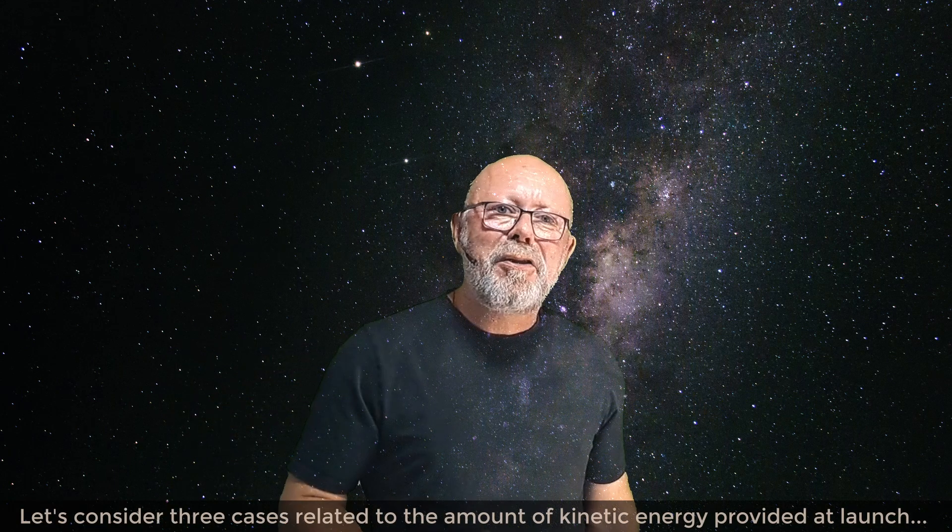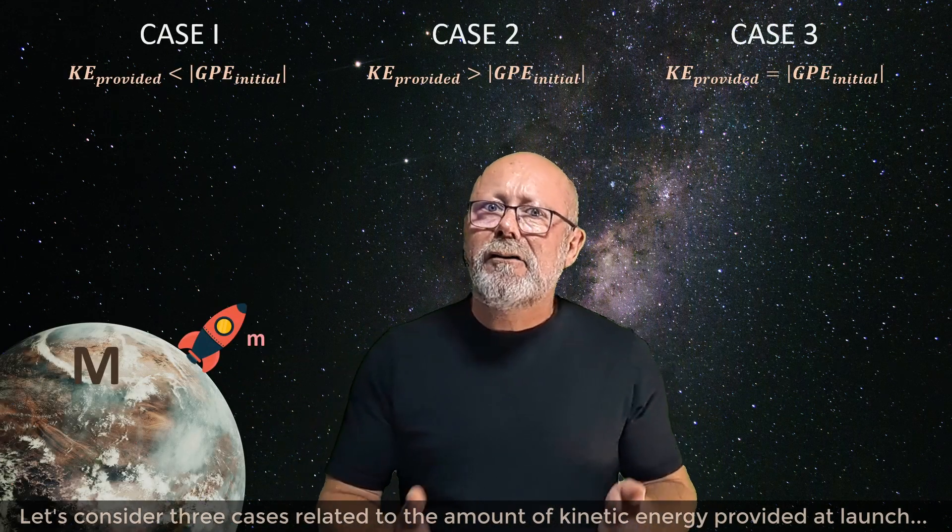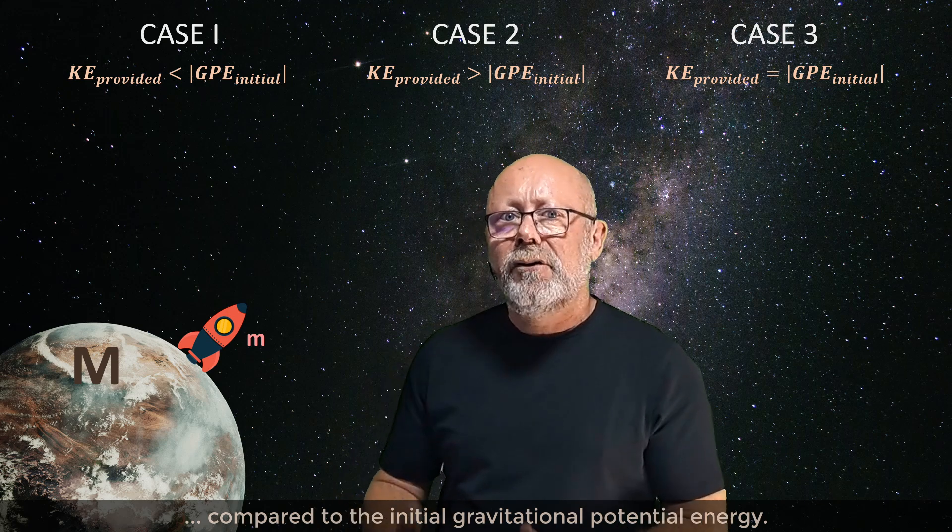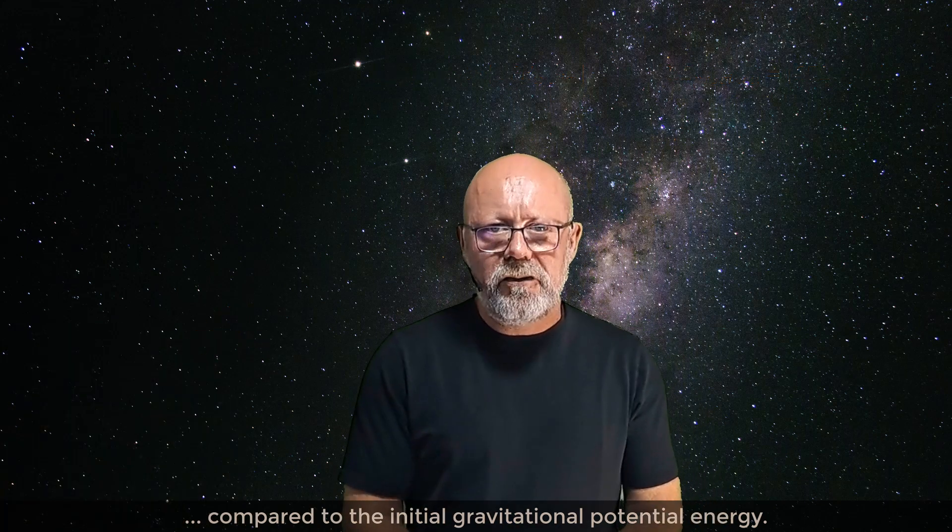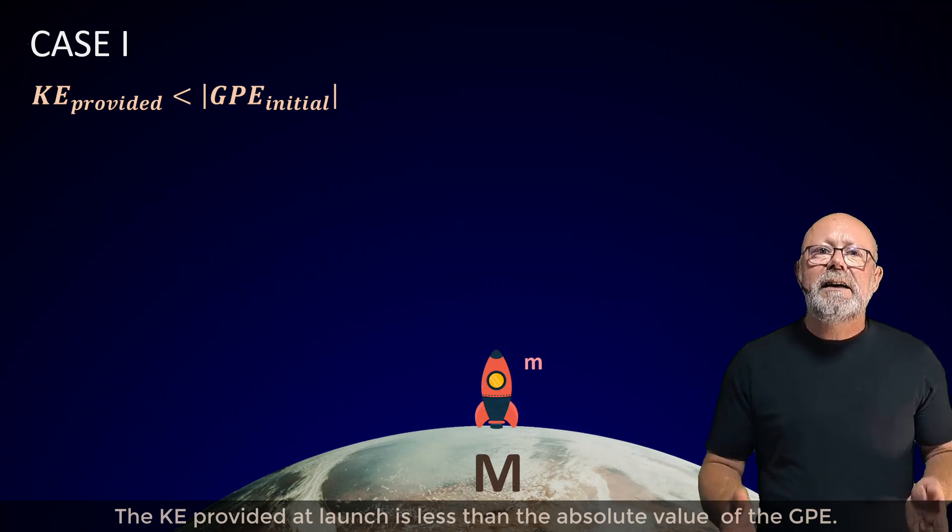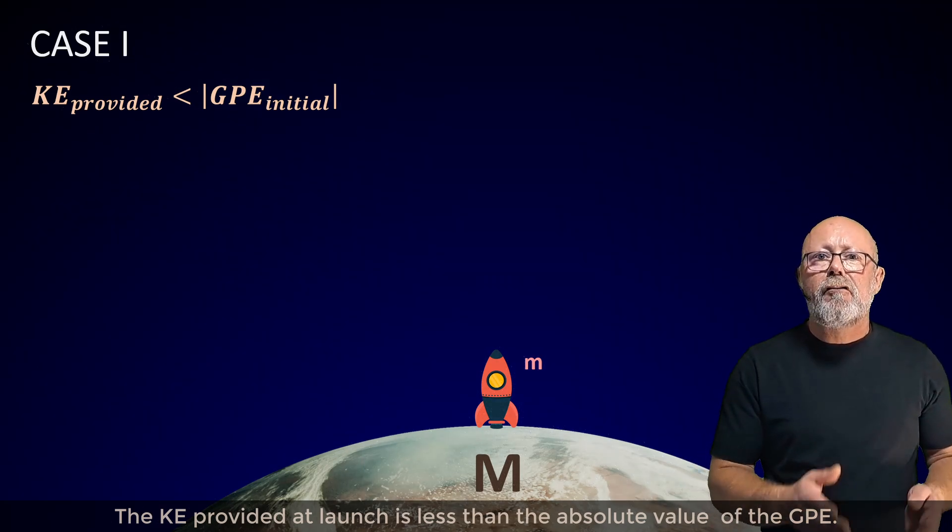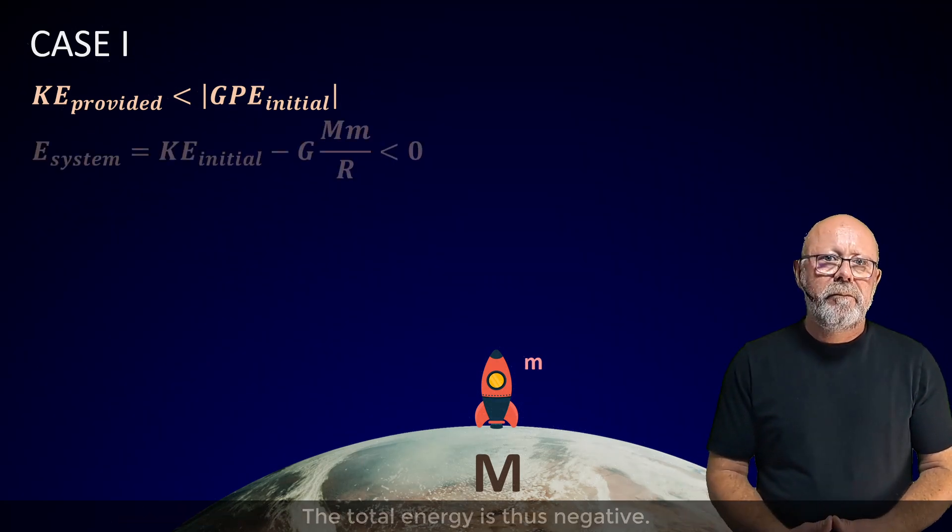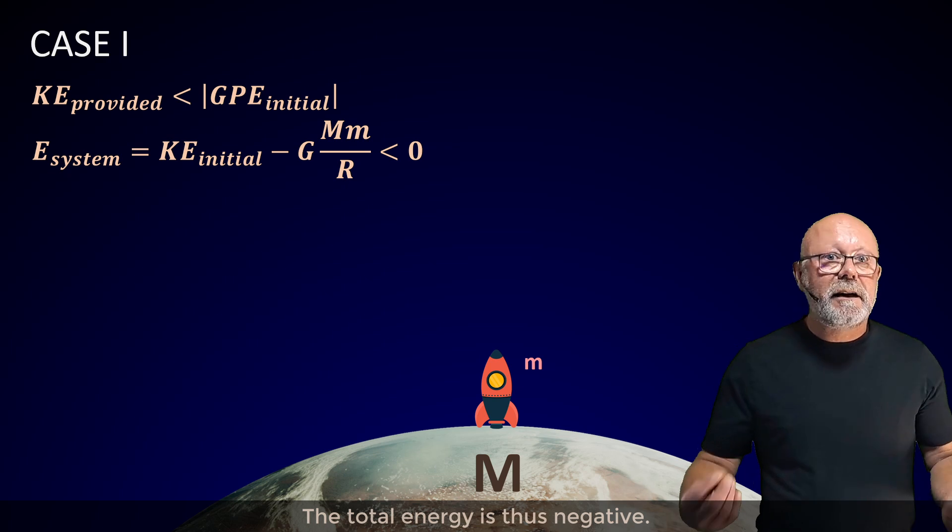Let's consider three cases related to the amount of kinetic energy that was provided at launch, compared to the initial gravitational potential energy. First case: the kinetic energy provided at launch is less than the absolute value of the gravitational potential energy. The total energy is thus negative.